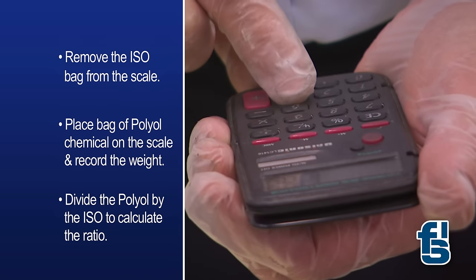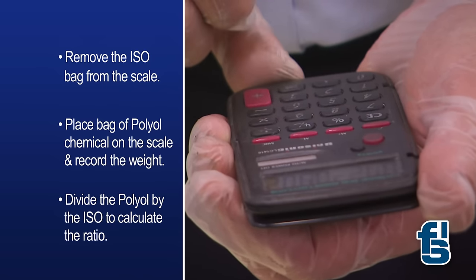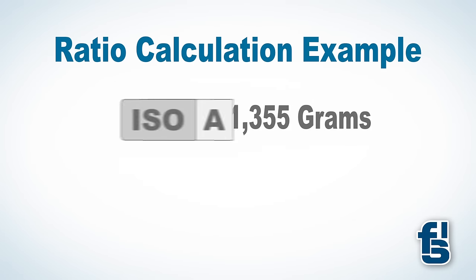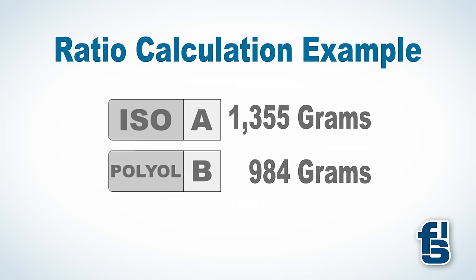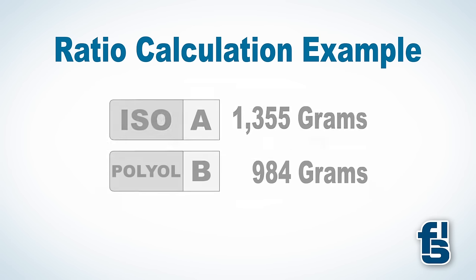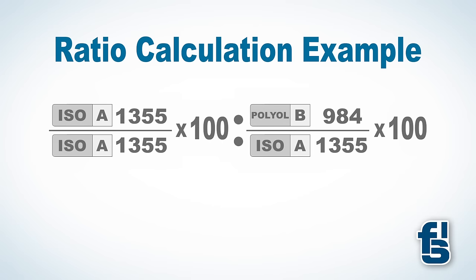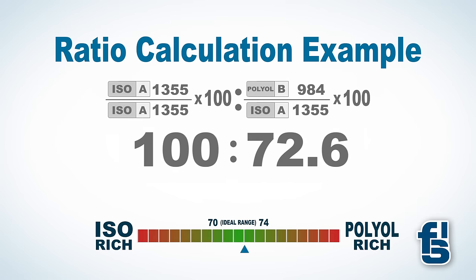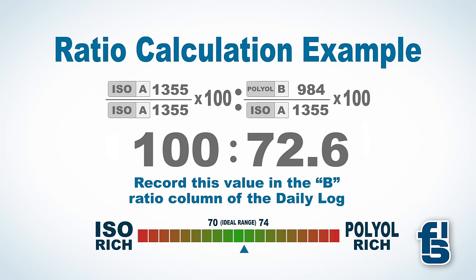Now, divide the polyol by the ISO to calculate the ratio. In this example, the ISO weighed 1355 grams and the polyol weighed 984 grams. Using the ratio formula, divide 984 by 1355, then multiply by 100, which results in a ratio of 72.6. Record this value in the B ratio column of the daily log.